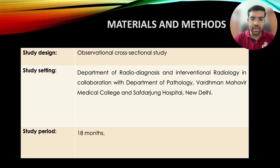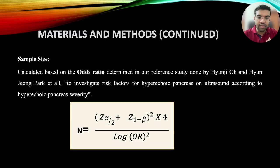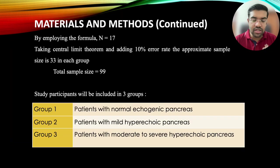Materials and methods. The study was done at Vardaman Mahavir Medical College and Safdarjang Hospital, New Delhi, over a period of 18 months. It was an observational cross-sectional study. The sample size was calculated based on the odds ratio determined in the reference study and was found to be 99.